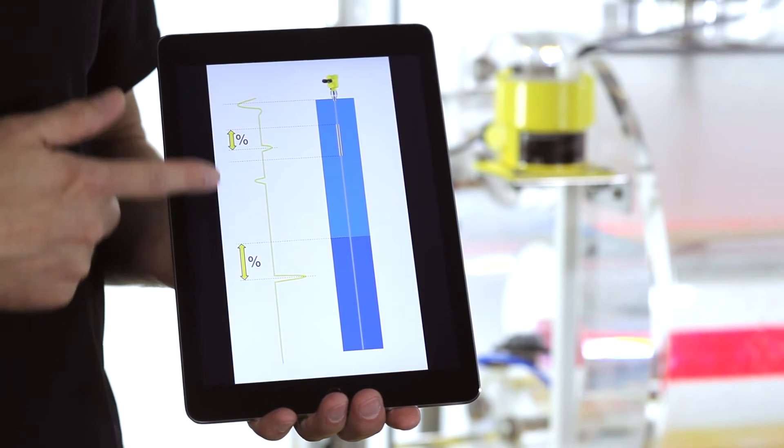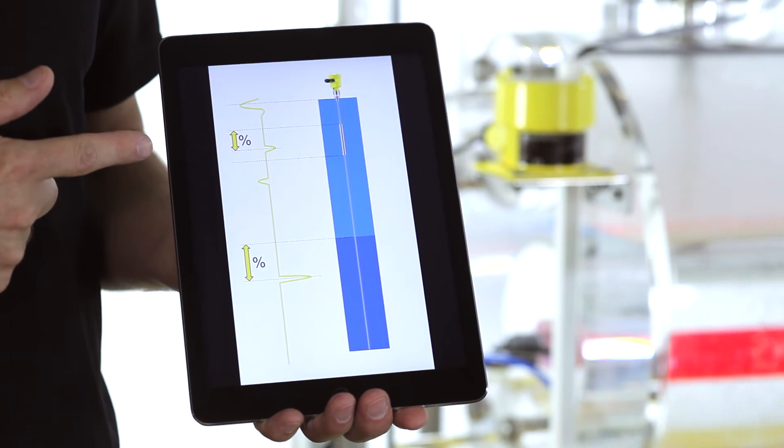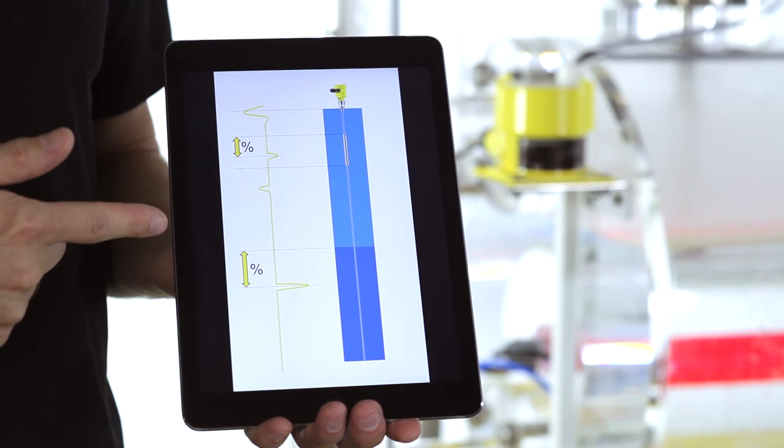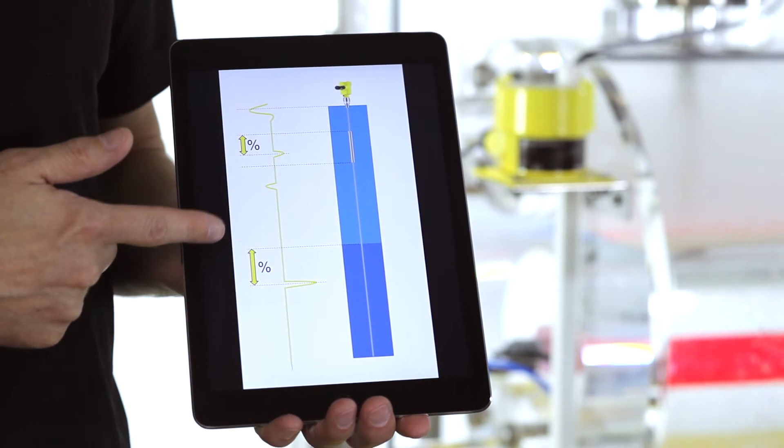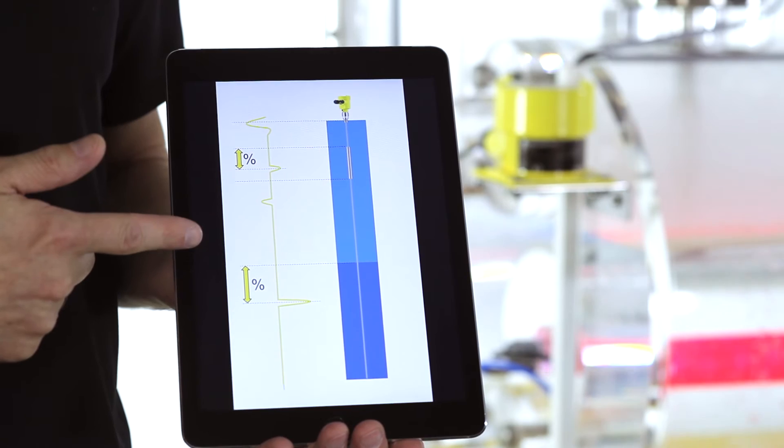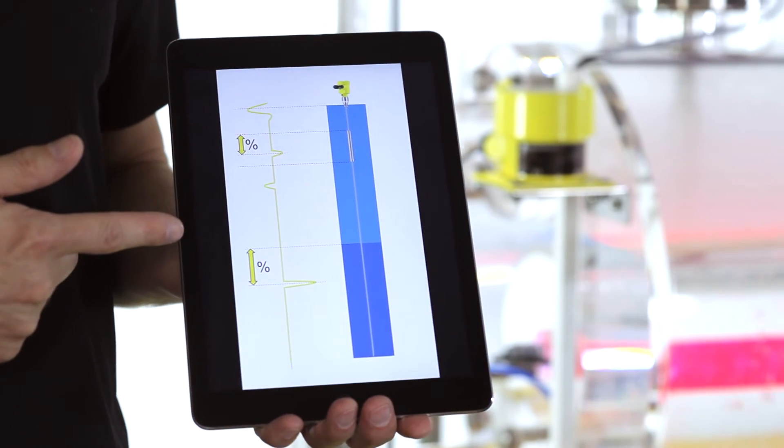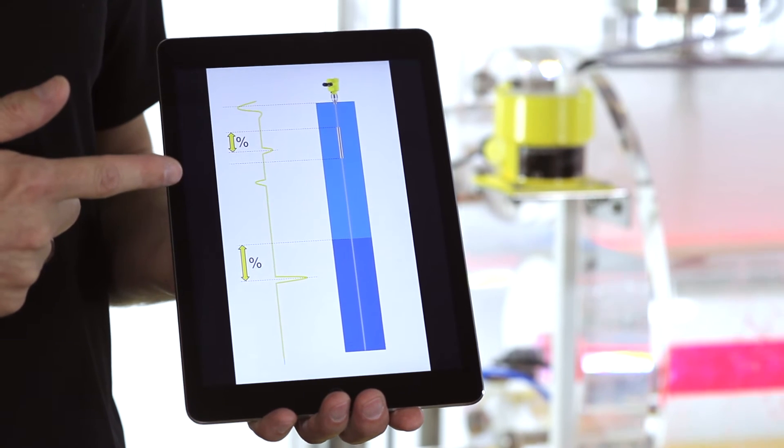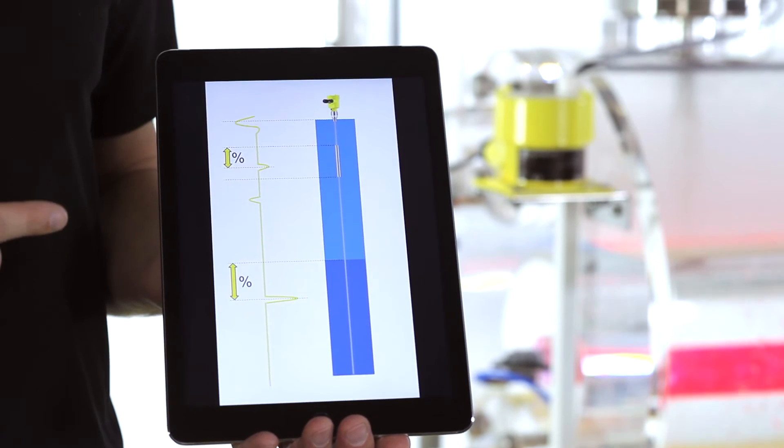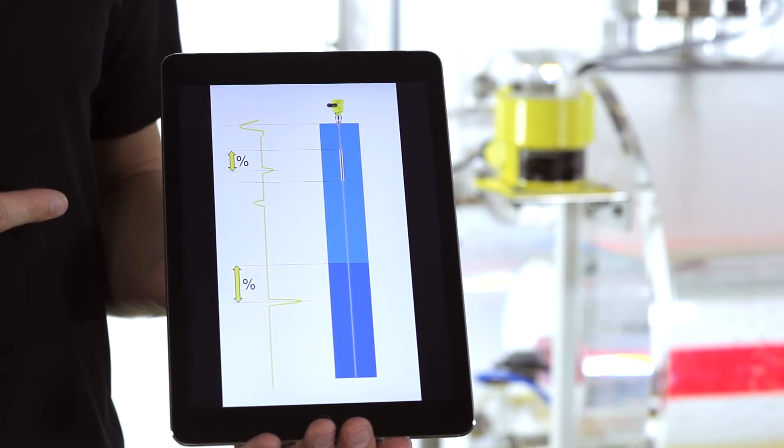So with this knowledge, the electronics can compensate and give out the real level echo and the real level measurement. That allows the VegaFlex 86 to provide a reliable and accurate level measurement although we have very challenging process conditions.